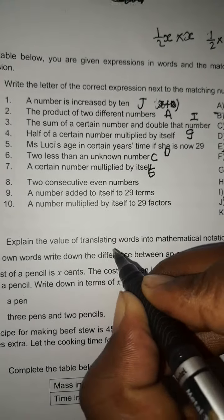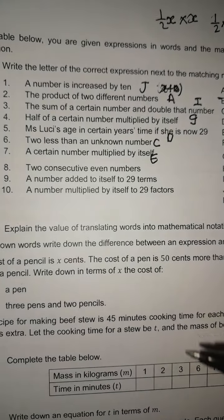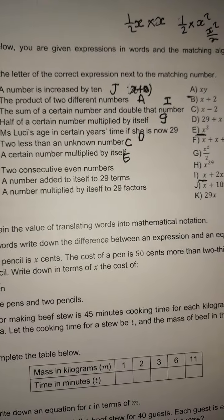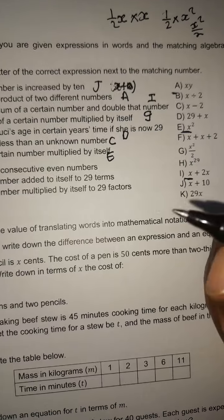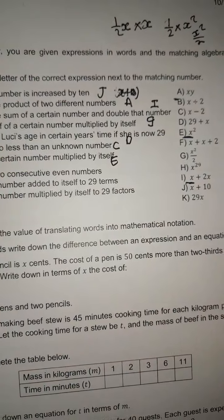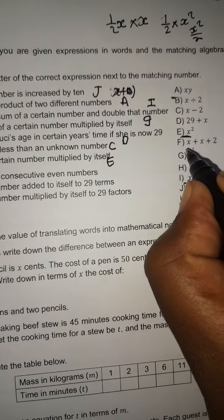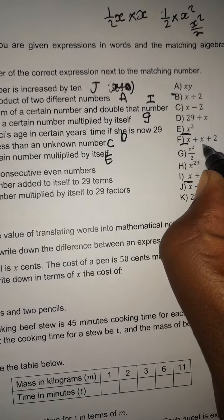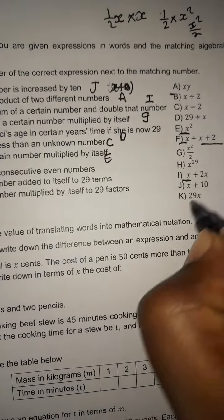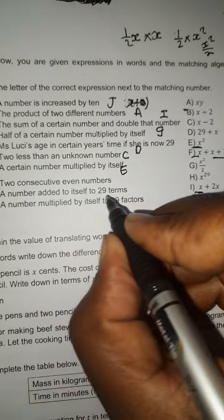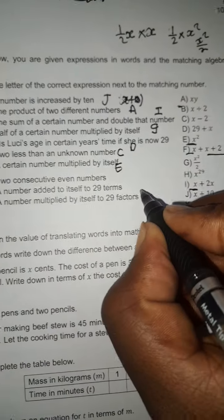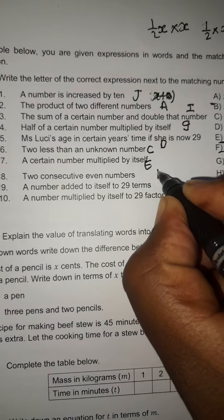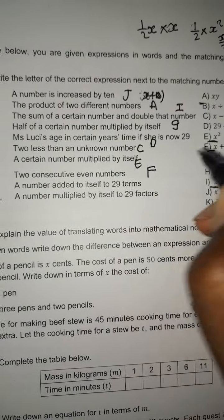'Two consecutive even numbers' — meaning those that follow each other. Let the first number be x and the second one will be x plus 2. So we'll take F in this case.